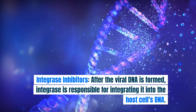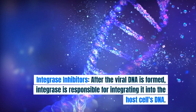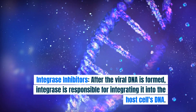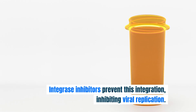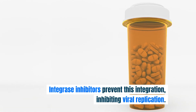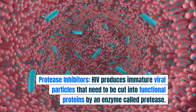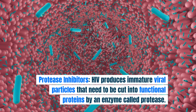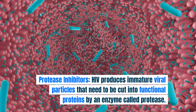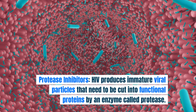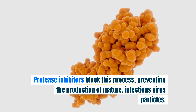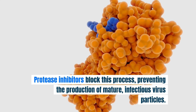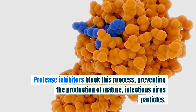Integrase inhibitors: After the viral DNA is formed, integrase is responsible for integrating it into the host cell's DNA. Integrase inhibitors prevent this integration, inhibiting viral replication. Protease inhibitors: HIV produces immature viral particles that need to be cut into functional proteins by an enzyme called protease. Protease inhibitors block this process, preventing the production of mature, infectious virus particles.